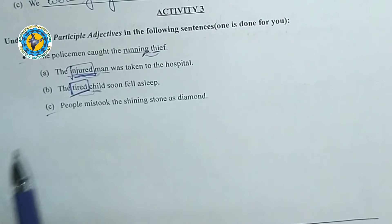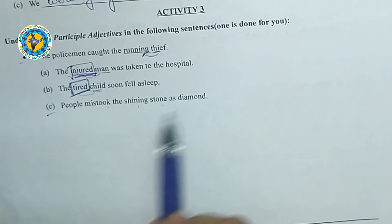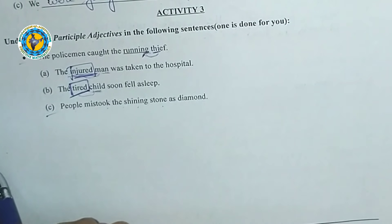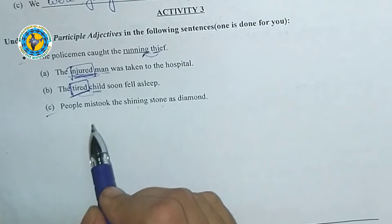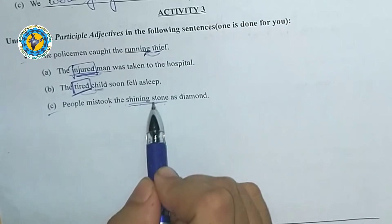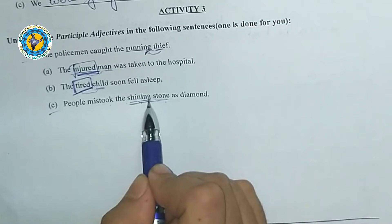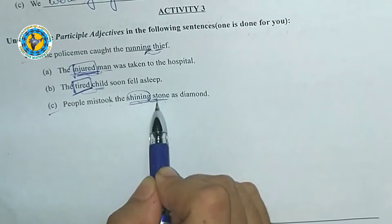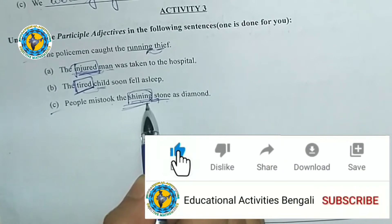Last sentence: 'People mistook the shining stone as a diamond.' Here, 'shining' is the participle adjective. It describes the stone. 'Shining' is the word that modifies the noun 'stone,' so it is the participle adjective in this sentence.